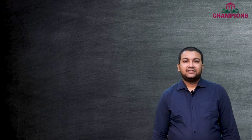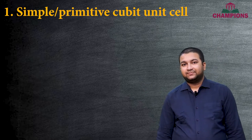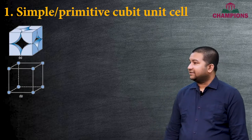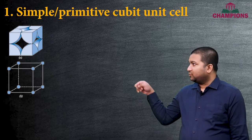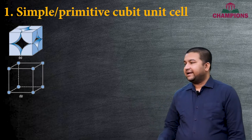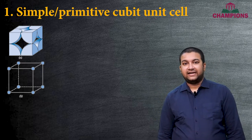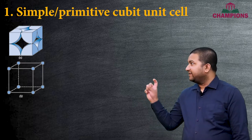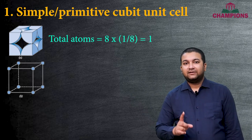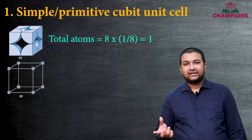Starting with the first one — the primitive or simple cubic unit cell — the diagram shows a cube representing the unit cell, with one-eighth of one atom fitted on each of the eight corners. So all eight corners each have one-eighth of an atom.